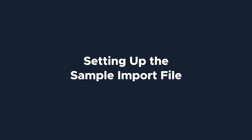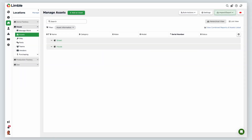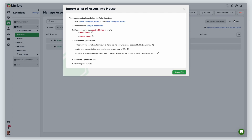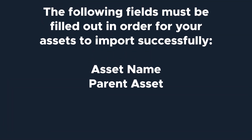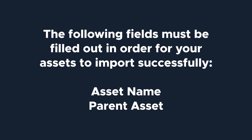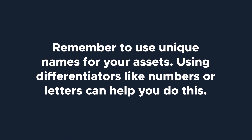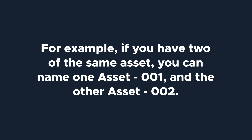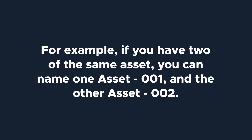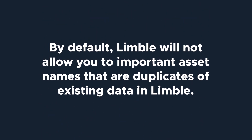Now let's set up the import file. On the Manage Assets page, click on the Import Export button from the toolbar in the top right corner. From the new drop-down, select Import Assets. You will be taken to a new window with a list of instructions. Download the spreadsheet by clicking on Sample Import File and open the file. Do not remove or change the required fields. The following fields must be filled out for your assets to import successfully: Asset Name and Parent Asset. Remember to use unique names for your assets — using differentiators like numbers or letters can help. For example, if you have two of the same assets, you can name one Asset-001 and the other Asset-002. By default, Limble will not allow you to import asset names that are duplicates of existing data in Limble. While this can be turned off in settings, we don't recommend it.